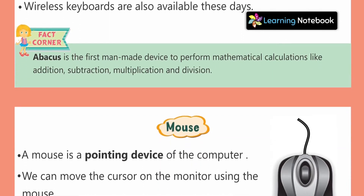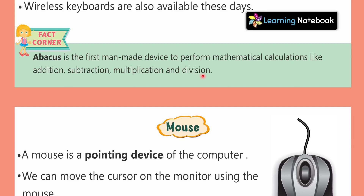Before moving further, we have come across a fact corner. The Abacus is the first man-made device to perform mathematical calculations like addition, subtraction, multiplication, and division.